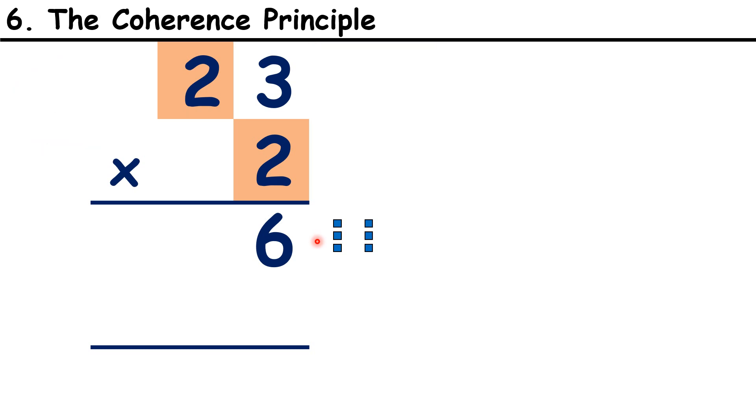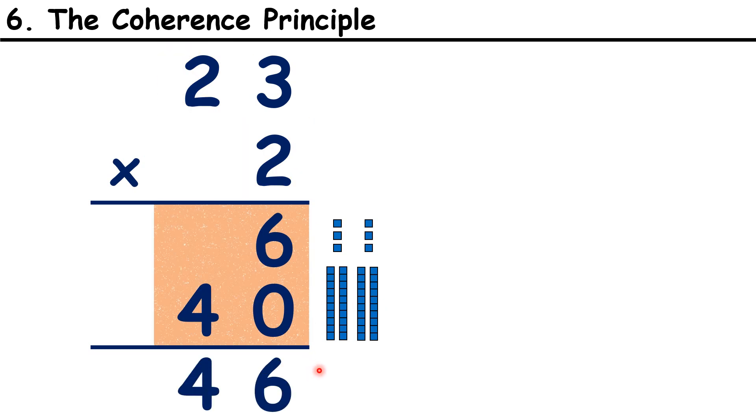But in fact, rather than aiding attention, unnecessary graphics and sounds just cause distraction and prevent children from learning. This brings us to our sixth principle, the Coherence Principle. Children need to be focused on the thing that you're explaining, so only use pictures if they support your explanation, and avoid fancy animations and sound effects.